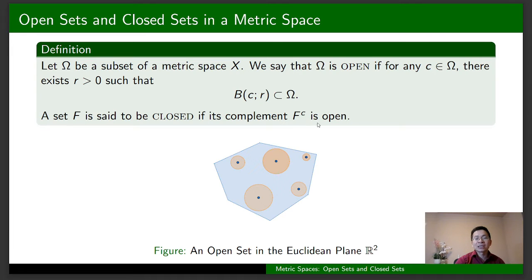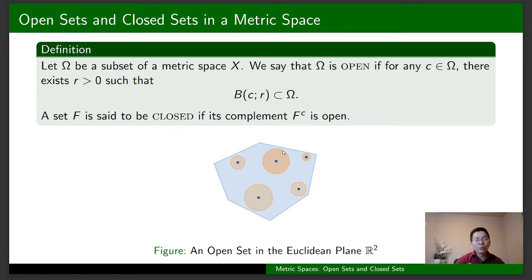This is an illustration of an open set in the Euclidean plane R². This set is open because, no matter what c you take in this set, there is r greater than zero such that the open ball with center c and radius r is a subset of Omega. We see that r usually depends on the center c.